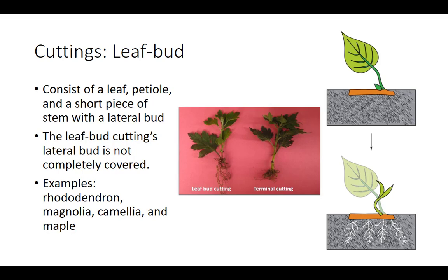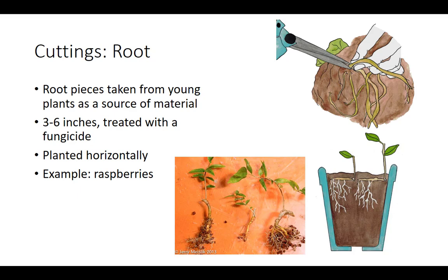Root cuttings are root pieces taken from young plants as a source of material. Roots are dug in the winter or early spring, cleaned, cut 3 to 6 inches in length, and treated with a fungicide. Root cuttings are typically planted horizontally, approximately 2 inches deep. Typically, the adventitious shoot is produced following the production of roots at the base of the newly formed shoot. Raspberries are commonly propagated using root cuttings. Root cuttings are not commonly done for most types of plants because root cutting is labor intensive and the plant produced can be different from the parent plant.